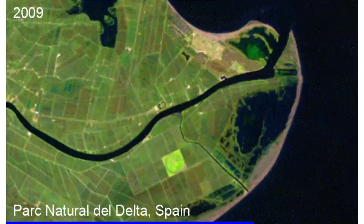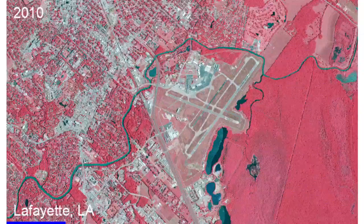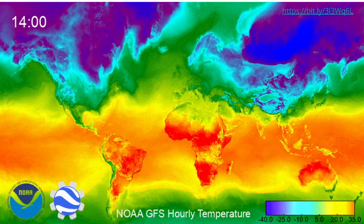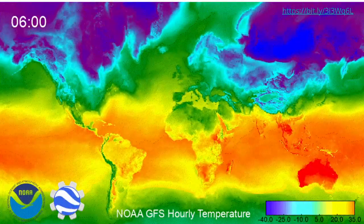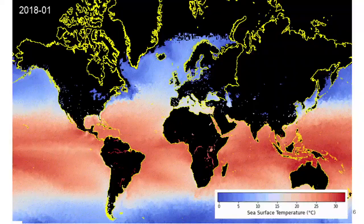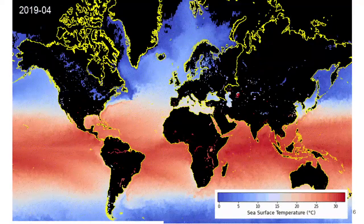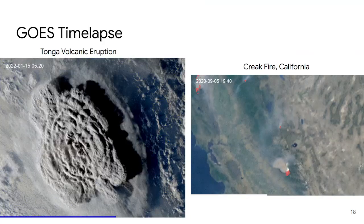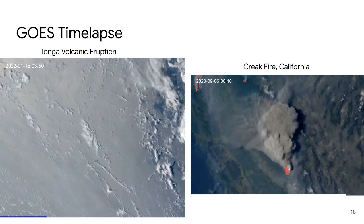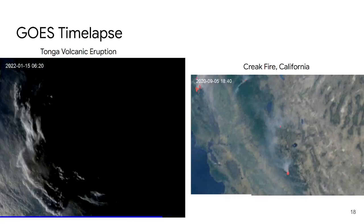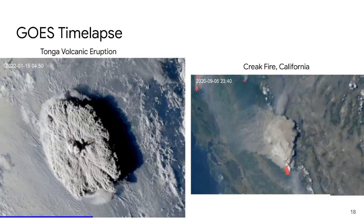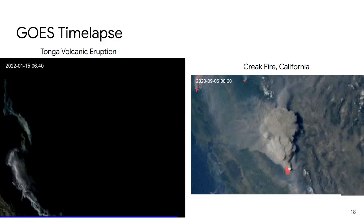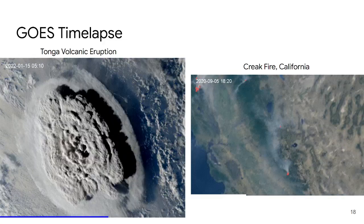You can also visualize coastal erosion and any location you're interested in. We have both low-resolution and high-resolution data, and you can also use weather and climate data — for example, temperature dynamics within 24 hours, sea surface temperature, vegetation dynamics, volcanic eruptions, and wildfires. There are a variety of satellite datasets with different spatial and temporal resolutions, so anyone can use the web app to create animations.